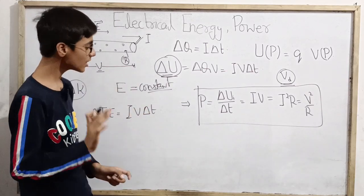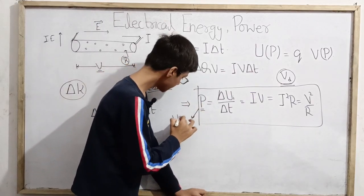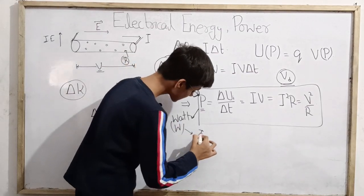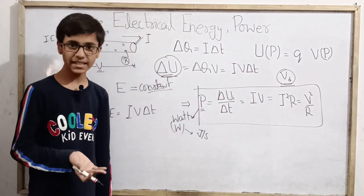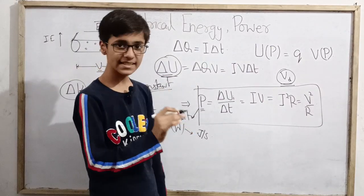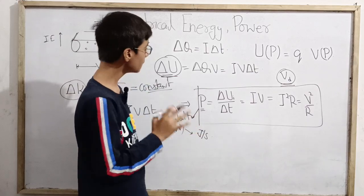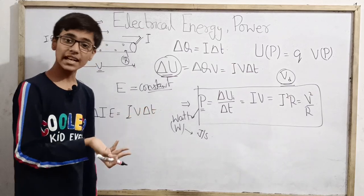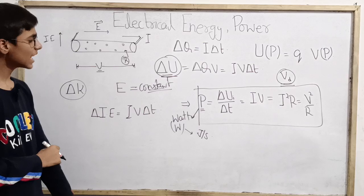The unit of power is the Watt, represented by W, which is joules per second. So if any device requires 400 watts, it means every second there should be a supply of 400 joules — at every second there is a loss of 400 joules in electrical energy. That is how the device works, and that is what power is about.